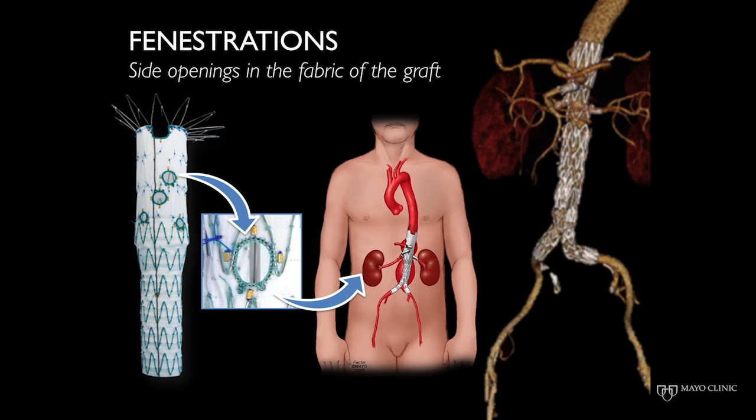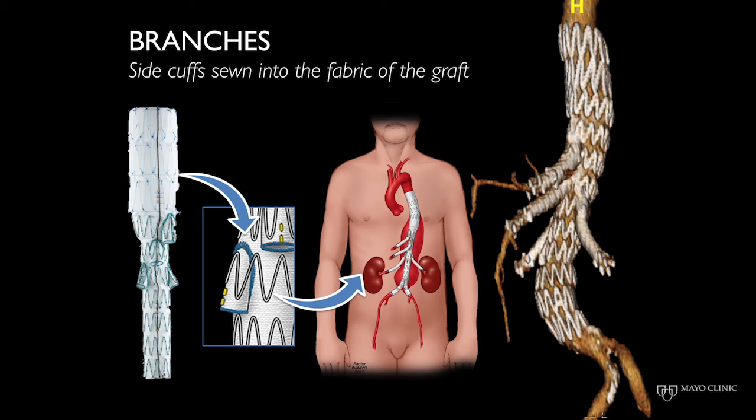How can this be done? Special stents are needed to preserve blood flow to the kidney and intestinal arteries while repairing the aneurysm. This can be done using fenestrated and/or branch stent grafts. Fenestrations are small windows cut into the fabric, and branches are small side arms or cuffs built into the main aortic stent, which allows us to place additional bridging stents up across the kidney blood vessels themselves.